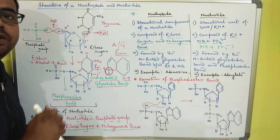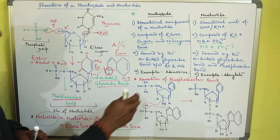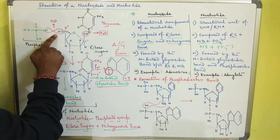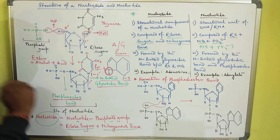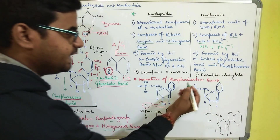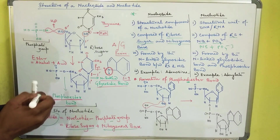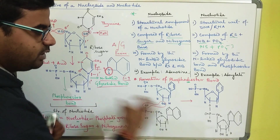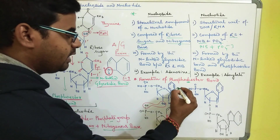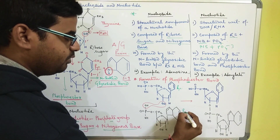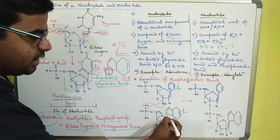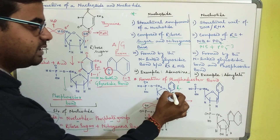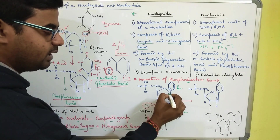Now coming to the formation of the phosphodiester bond. We have seen the phosphomonoester bond between the ribose sugar and the phosphate group. The phosphodiester bond is the second bond formed between two consecutive nucleotides. If this first nucleotide is a pyrimidine, the bond is between number one nitrogen and carbon one prime; if the second nucleotide is a purine, the bond is between the ninth nitrogen and carbon one prime of the ribose.